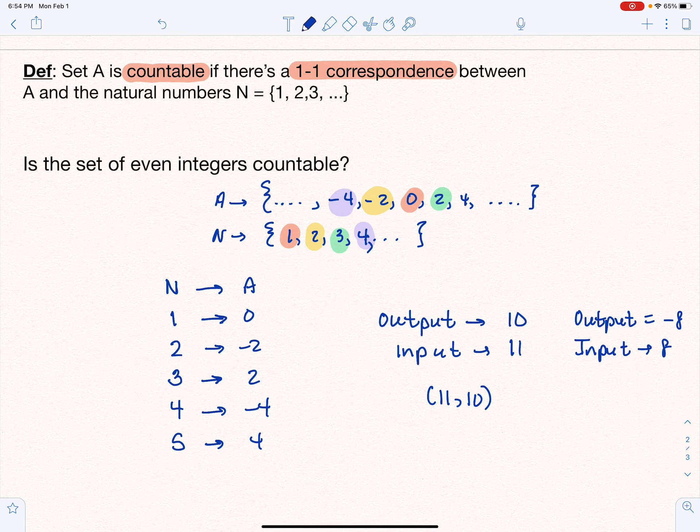So given an element in set A, we can always figure out the natural number that goes to it, which makes this countable.